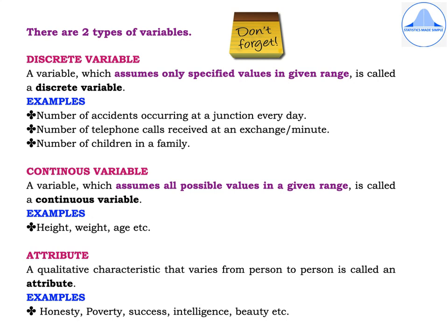An attribute is a qualitative characteristic that varies from person to person. Examples include honesty, poverty, success, intelligence, and beauty.